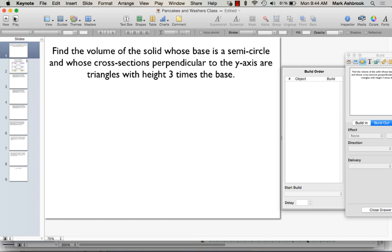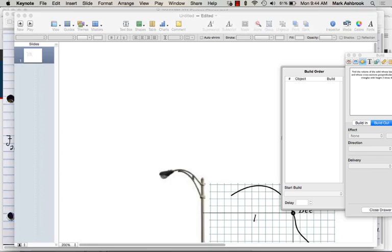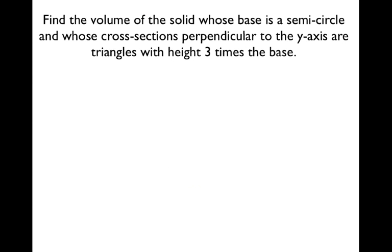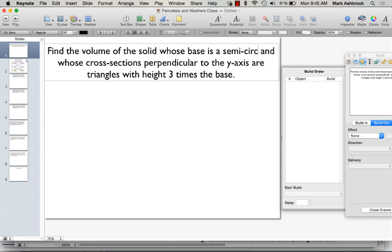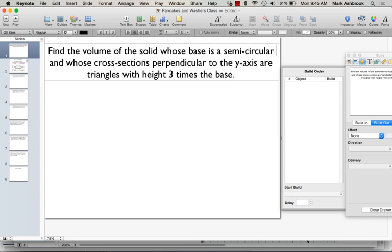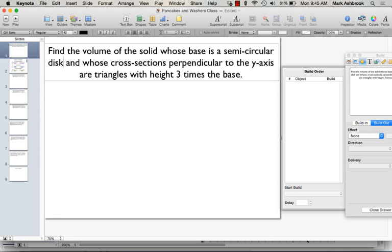Alright, so let's try this example. We want the volume of a solid whose base is a semicircular disc — semicircle is just the perimeter, so semicircular disc would be more accurate — and whose cross-sections perpendicular to the y-axis are triangles with a height three times the base.